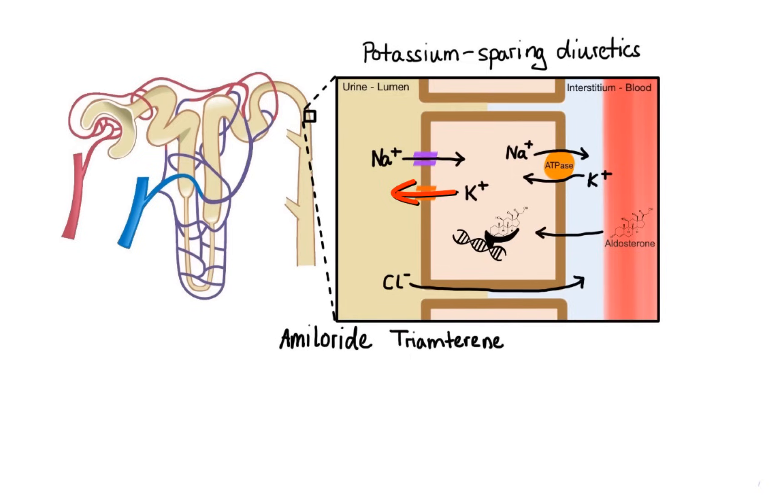Because aldosterone antagonists compete for binding to that intracellular receptor, the result is reduced synthesis of proteins that activate sodium channels and decreased number of sodium-potassium ATPases, which ultimately leads to potassium retention. Drugs that belong to this group include spironolactone and eplerenone. Now when it comes to side effects, as you may already guess, hyperkalemia is the biggest problem, especially when these diuretics are combined with other drugs that can also increase potassium levels.